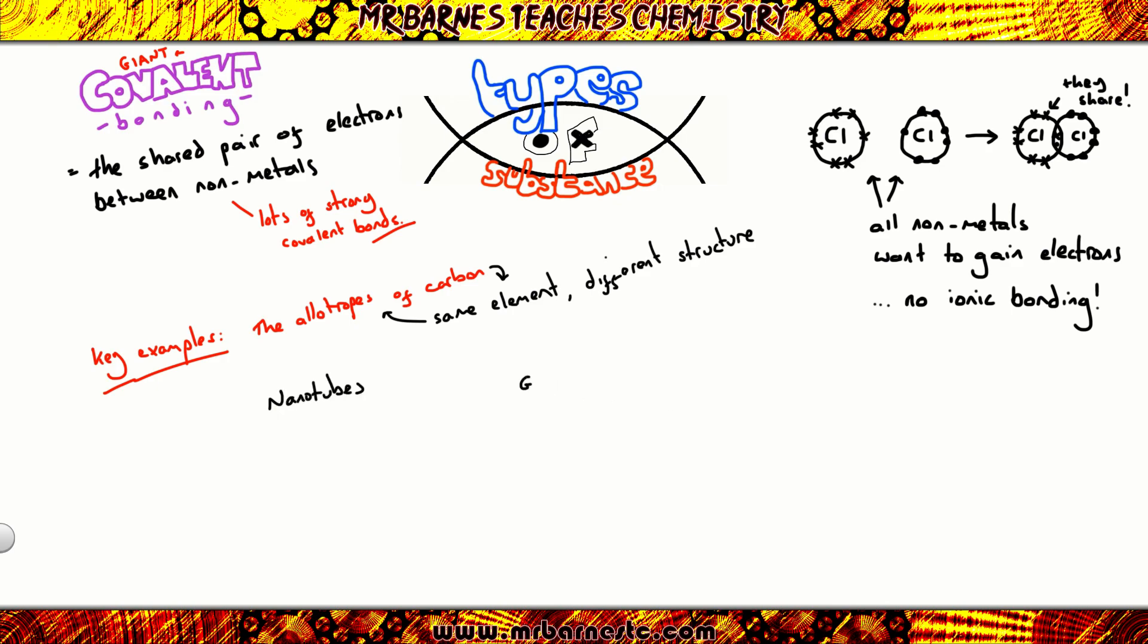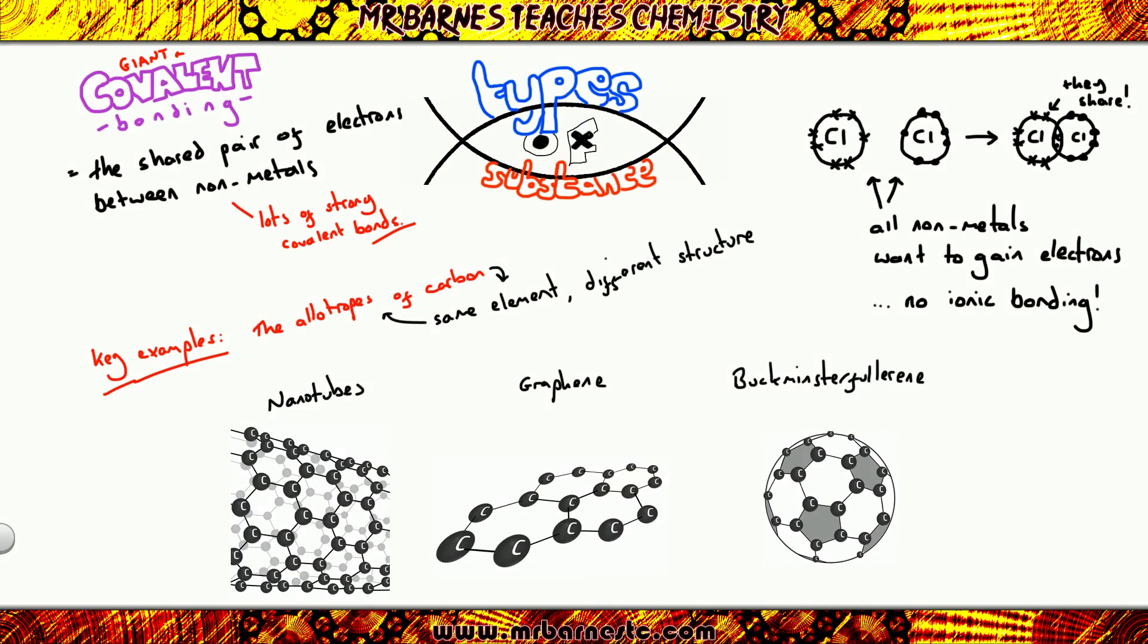There are three other allotropes of carbon that you do need to know which are nanotubes, graphene and Buckminster Fullerene. One thing that's really important is Buckminster Fullerene itself is not a giant covalent compound. That has the formula C60, so that is simple covalent. But I've put it in here because it's an allotrope. Now all three of these allotropes have three strong covalent bonds. That means that all of them have delocalized electrons, electrons that are free to move, and therefore they all conduct electricity. So that's one important property for them. In particular, graphene, which is so tiny, can be used in circuits. Nanotubes are really strong, therefore they're used in tennis rackets. Why are they strong? Because there's lots of strong covalent bonds. And then Buckminster Fullerene, it looks like a football. What it can do is it can cage different drugs, so it's used in drug delivery systems.